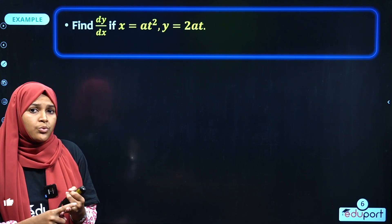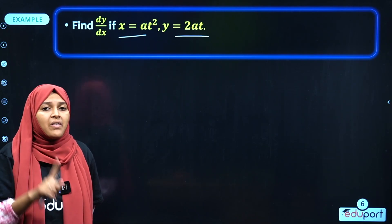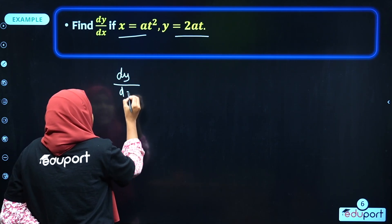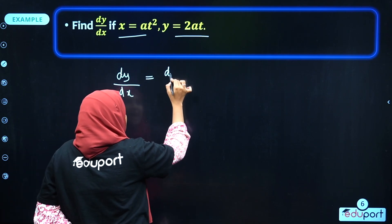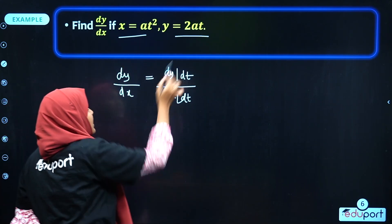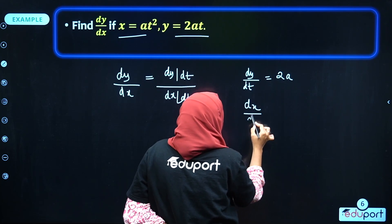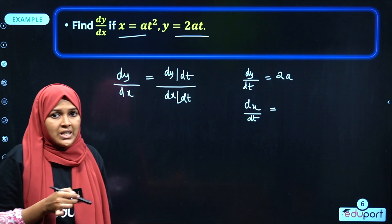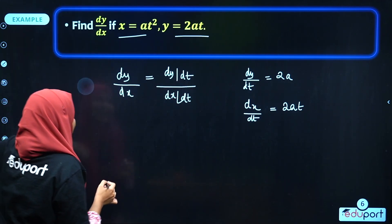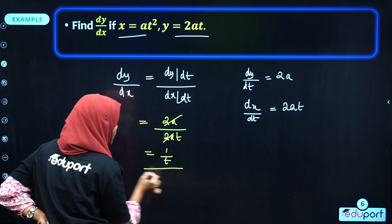Next: if x = at² and y = 2at, here x and y involve a third variable t. We use parametric differentiation: dy/dx = (dy/dt) ÷ (dx/dt). Now y = 2at, so dy/dt = 2a. And x = at², so dx/dt = a × 2t = 2at. Therefore dy/dx = 2a / (2at) = 1/t.